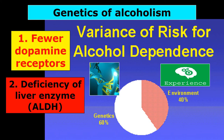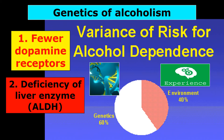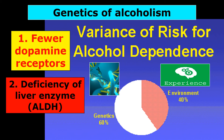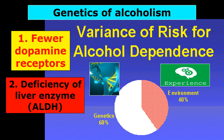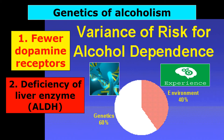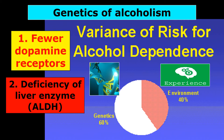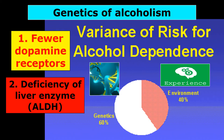People often ask if addiction is genetic. That's a complicated question because pretty much every physical or psychological characteristic is influenced by genetics. For alcohol addiction, if you have fewer dopamine receptors, you need to drink more alcohol to get a high, making you more susceptible to addiction. Also, some people are deficient in a liver enzyme called ALDH, which means they cannot drink very much alcohol — so people deficient in that enzyme will not become addicted to alcohol.